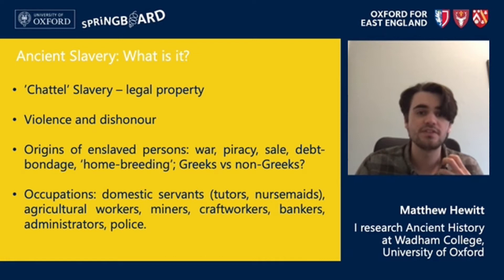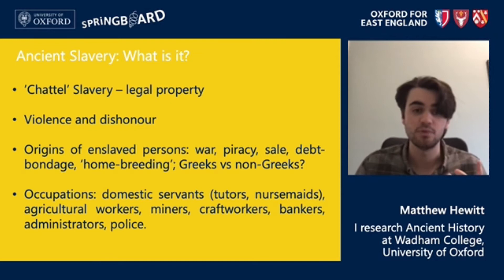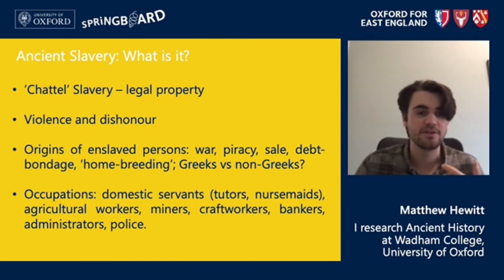In terms of what we find enslaved persons doing in the ancient world, there is a huge variety. We have domestic servants serving as tutors or nursemaids for the children of their enslavers; we have agricultural workers; we have miners; we have craft workers of varying degrees of skill; we have bankers, administrators, and even in classical Athens a police force made up of enslaved persons.